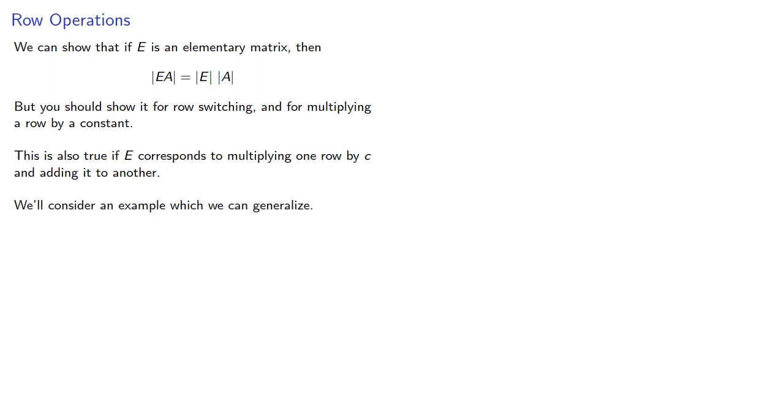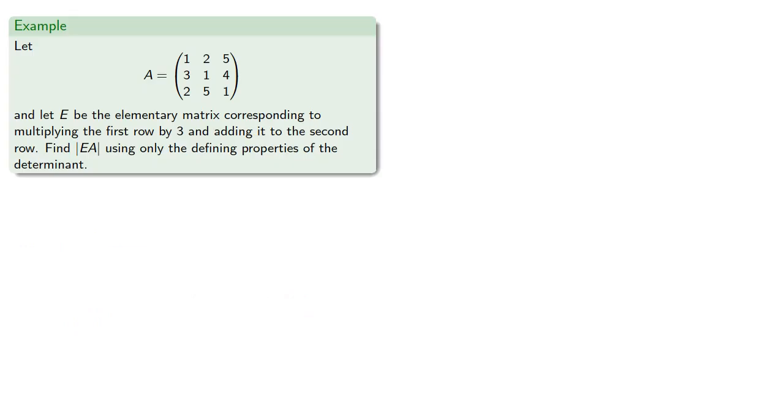And by we, I mean you. So we have our matrix, and let E be the elementary matrix corresponding to multiplying the first row by 3 and adding it to the second row. Let's find the determinant of EA using only the defining properties of the determinant. So we'll go ahead and compute EA.